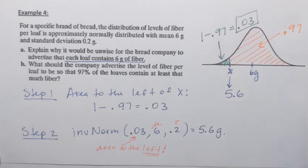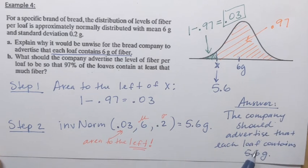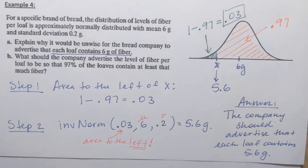And we got 5.6 grams. Let's write down the answer. The company should advertise that each loaf contains 5.6 grams. And one more time, it doesn't mean that every single loaf is going to contain 5.6 grams. It's going to mean, in this case, that 97% of loaves are going to contain that or more, which is good. But only 3% are going to contain less than 5.6 grams. But it's insignificant. That would be the answer to this question.